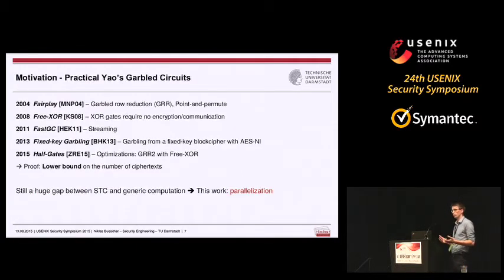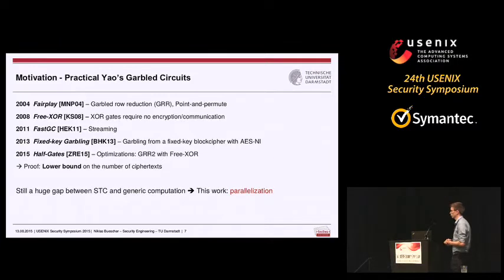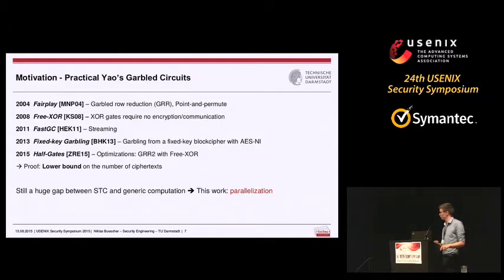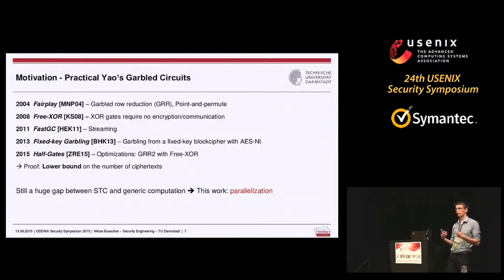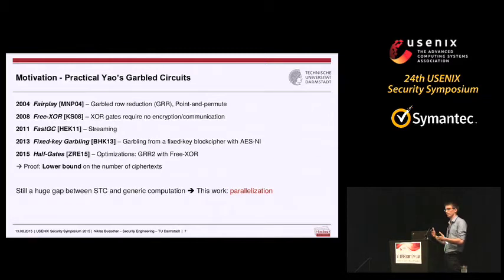That brings me to our motivation. The protocol was long seen as impractical until 2004, when a long line of practical work on secure computation based on Yao's garbled circuits started. In 2015 at EuroCrypt, the half-gate paper indicated that we have reached the lower bound on the number of ciphertexts needed for non-linear gates — meaning there is limited room for further improvement in that direction.